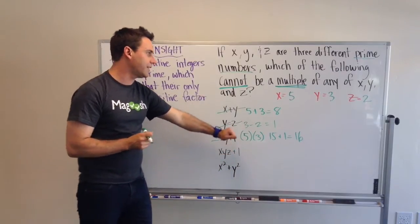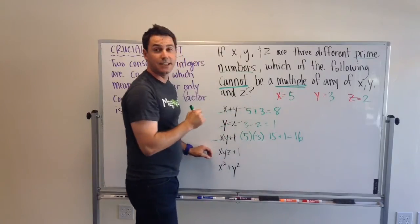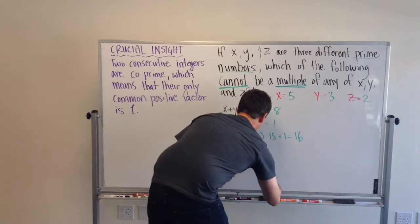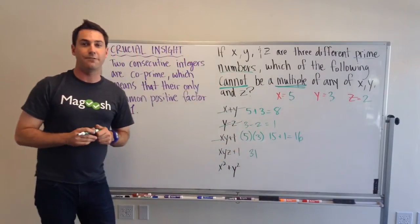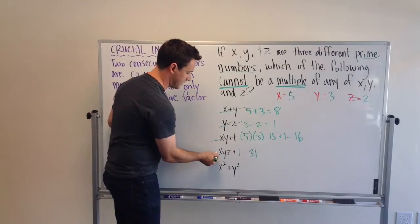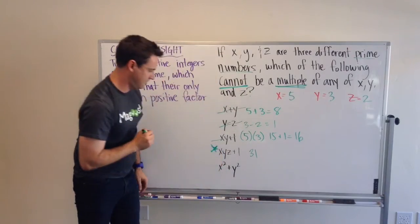Now, we have x, y, z, plus 1. So, it'll be 5 times 3, which is 15, times 2. It's 30, plus 1 is 31. Are any of these numbers a multiple of 31? No. Alright. So, this is looking good. That's supposed to be a star. It's a bad star.